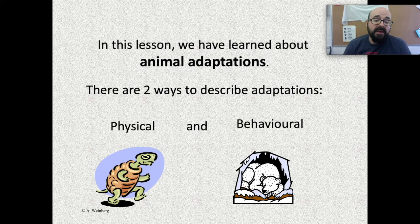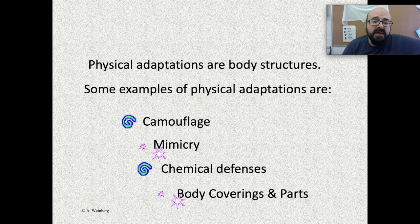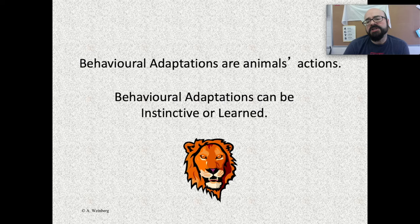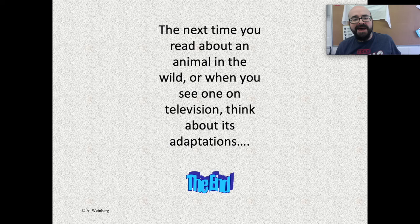In this lesson, we have learned about animal adaptations. There are two ways to describe adaptations: physical adaptations and behavioral adaptations. Physical adaptations are body structures — examples include camouflage, mimicry, chemical defenses, and body coverings and parts. Behavioral adaptations are animals' actions and can be instinctive or learned. The next time you read about an animal in the wild or see one on television, think about its adaptations.